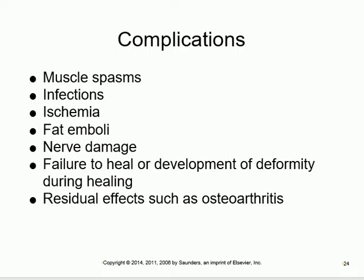Complications of fracture include muscle spasm to protect the area, infection, ischemia, and fat embolism. Fat embolism is important to remember: a common scenario is an elderly person falling and fracturing their pelvis, causing a piece of fat to enter the bloodstream, travel to the lungs, and cause pulmonary embolism. So the fracture starts locally and can end as pulmonary embolism - this is called fat embolism.